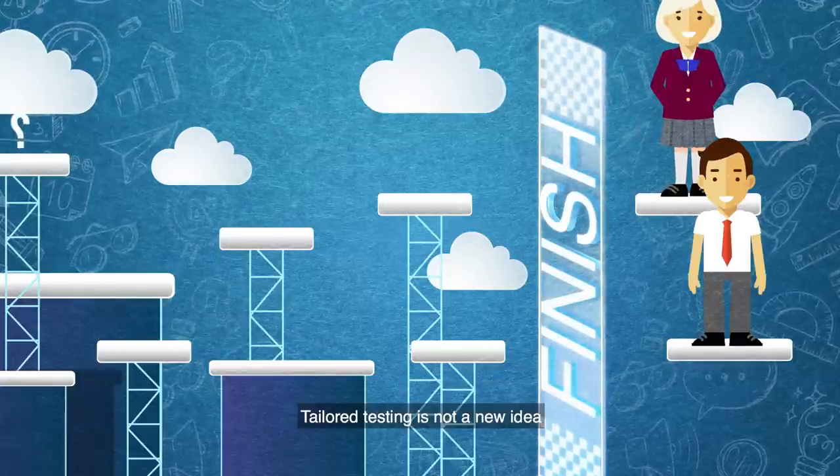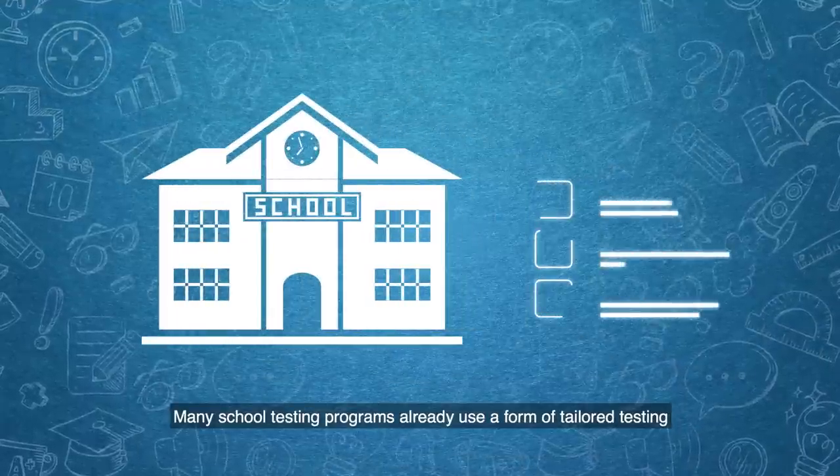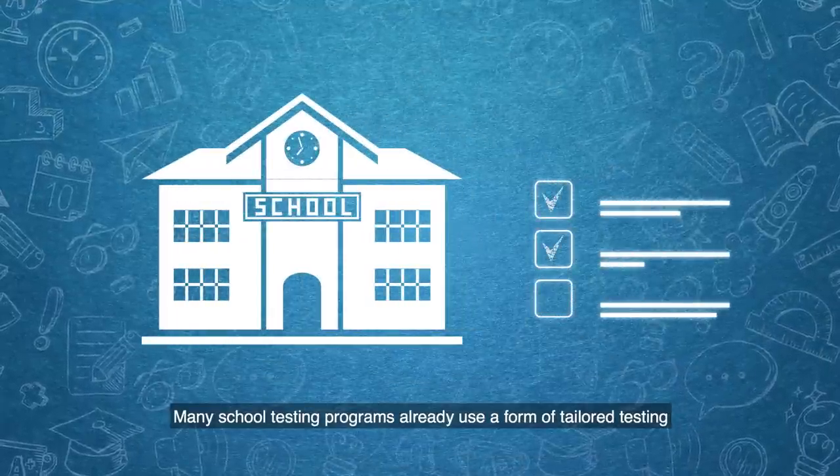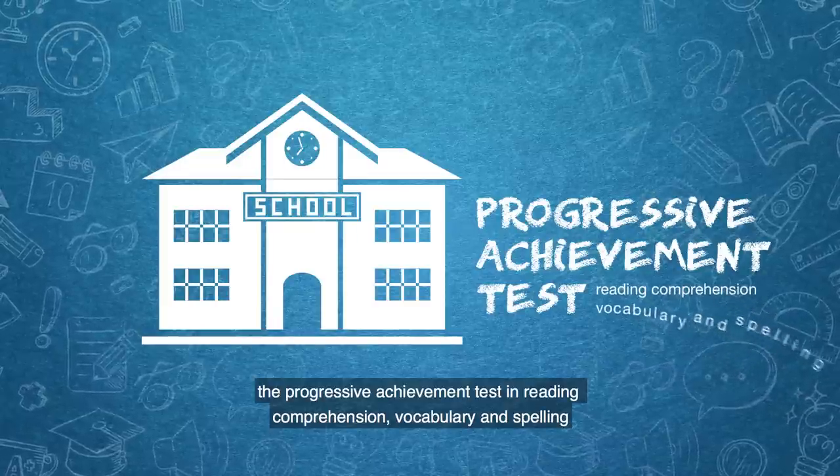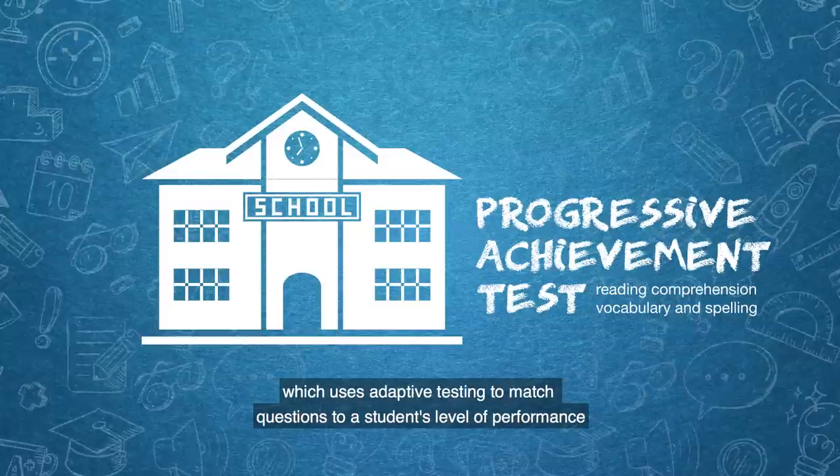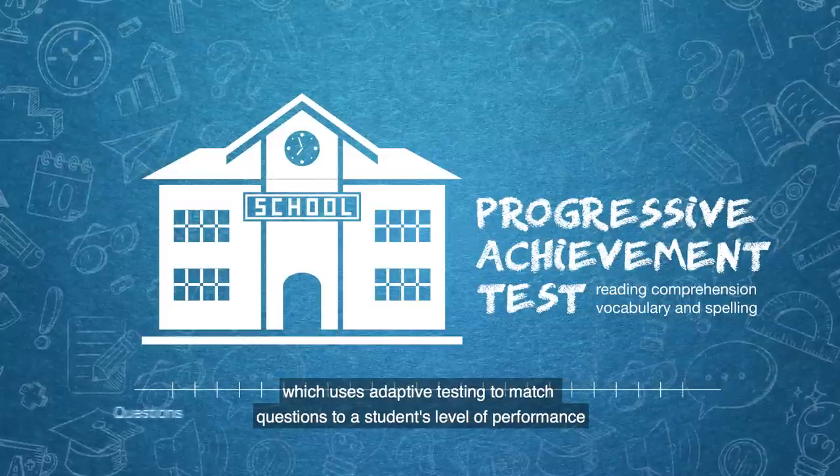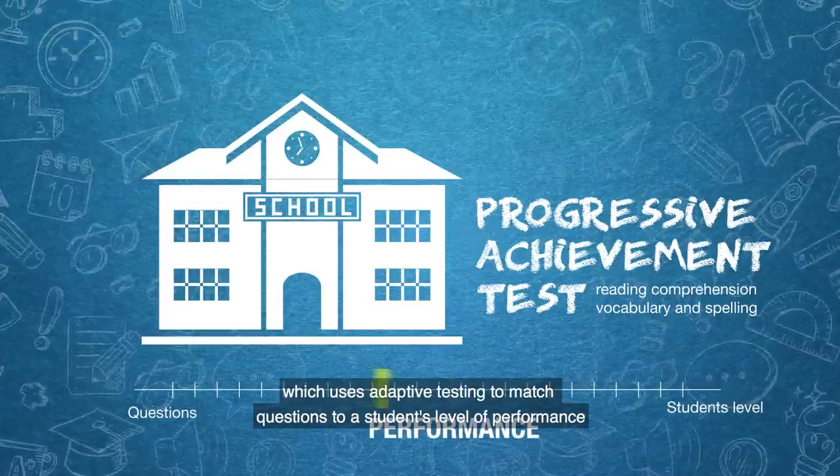Tailored testing is not a new idea. Many school testing programs already use a form of tailored testing. For example, the Progressive Achievement Test in Reading Comprehension, Vocabulary and Spelling, which uses adaptive testing to match questions to a student's level of performance.